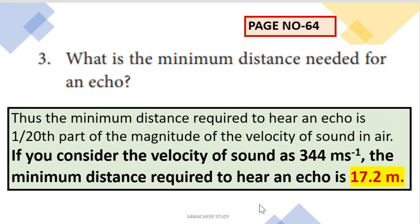Next question: what is the minimum distance needed for an echo? The distance required to hear an echo is 1/20th of the velocity of sound in air. The velocity of sound in air is 344 meters per second, so the distance is 344 divided by 20, which equals 17.2 meters. The minimum distance needed to hear an echo is 17.2 meters.